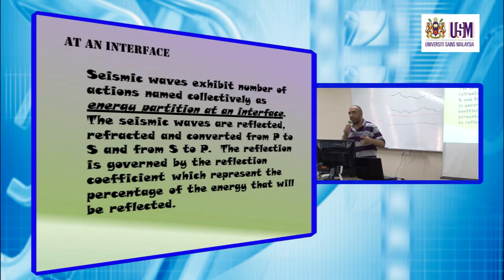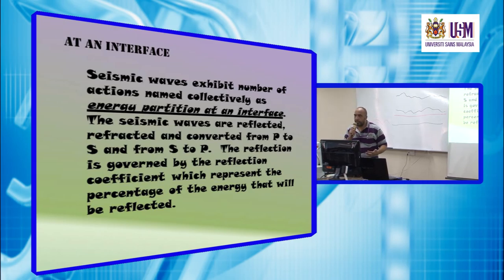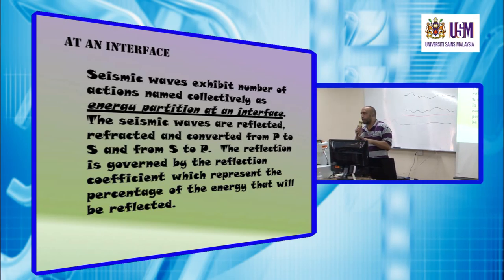And also converted from P to S and also from S to P. So as an interface, we have the waves converting from primary to secondary and also from secondary to primary. If we are propagating in solids, but if we are propagating in liquids, for example, for marine seismic experiment, we are not expecting to have reflected shear waves because it cannot propagate in sea water.